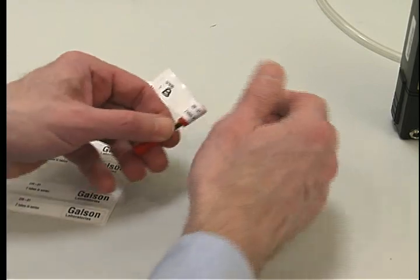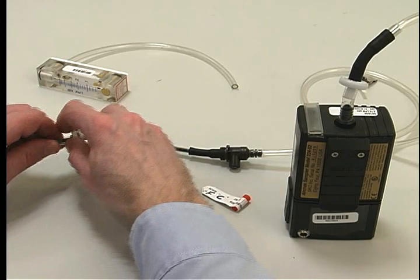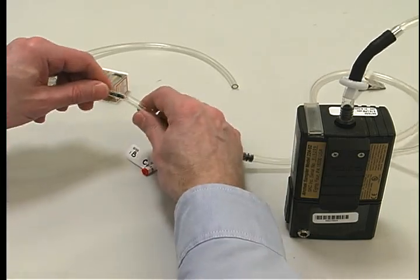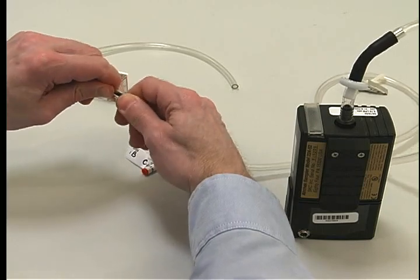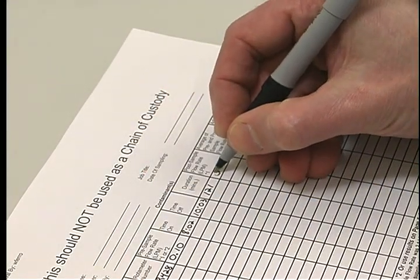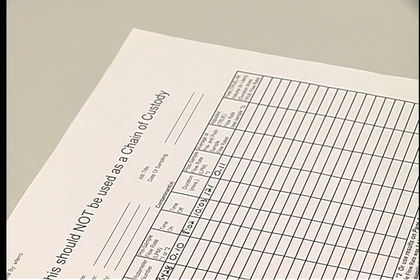A post calibration must be performed on the pump. Perform the post calibration the same way you did the pre calibration, using the marked calibration sorbent tubes, but do not make any set screw adjustments. Just record the flow rate on the pump calibration sheet. The pre and post rates should be within 10% of each other.